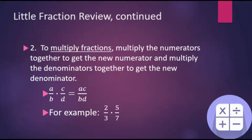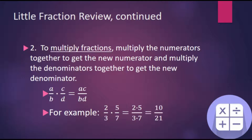In this example, we have 2 thirds times 5 sevenths. Using the rule for multiplying fractions, we'll multiply the numerators, 2 times 5, and multiply the denominators, 3 times 7. Simplifying, we end up with 10 twenty-firsts.